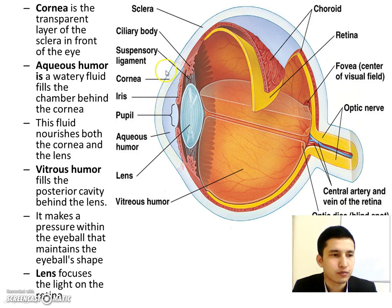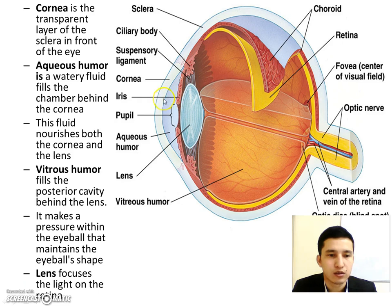We also have the aqueous humor, which is a watery fluid that fills the chamber behind the cornea. This fluid nourishes both the cornea and the lens.